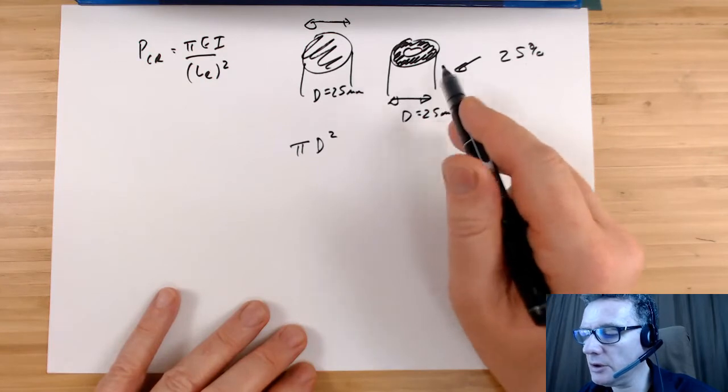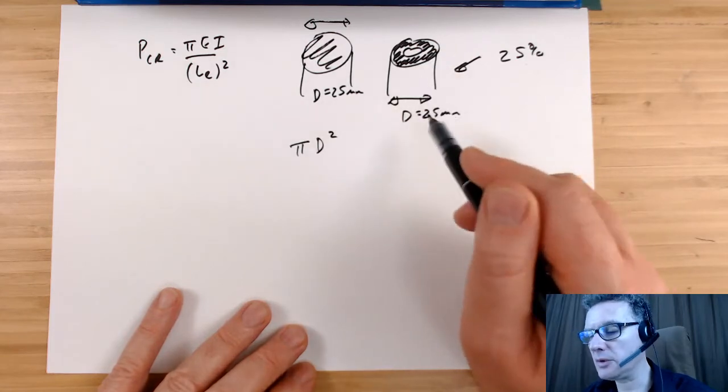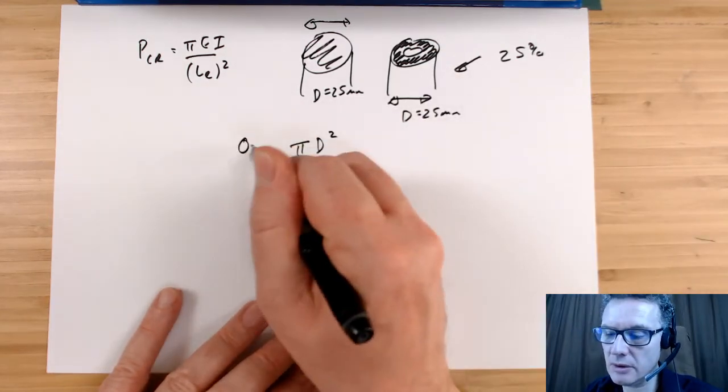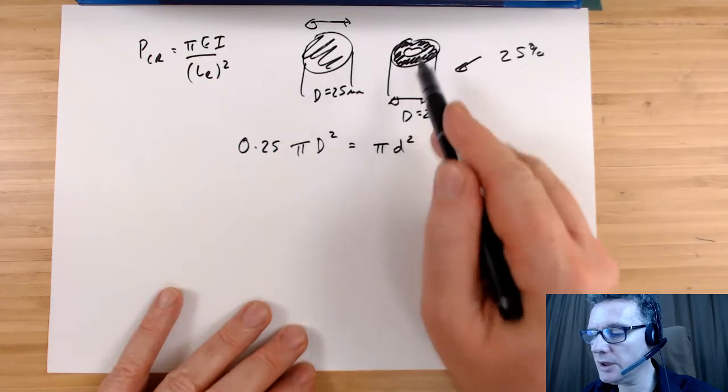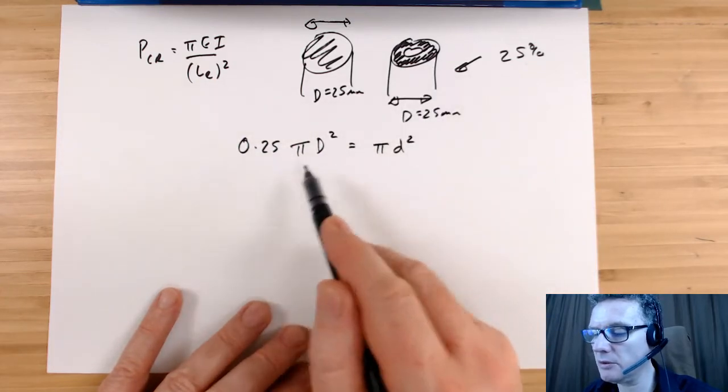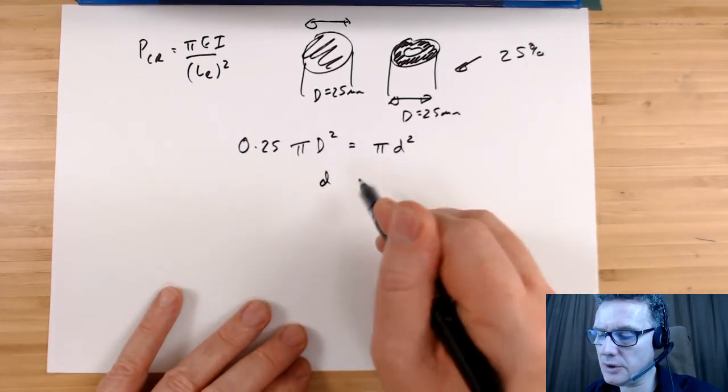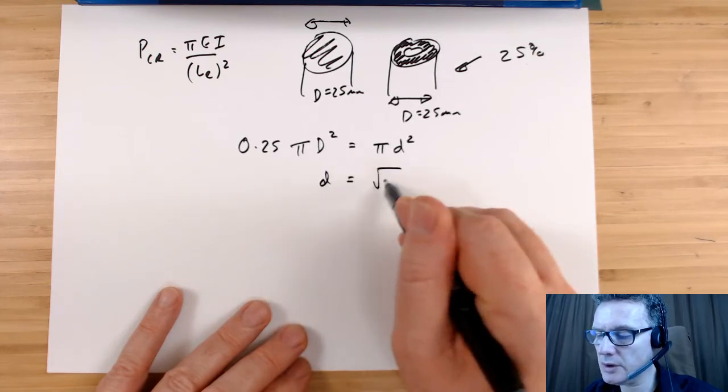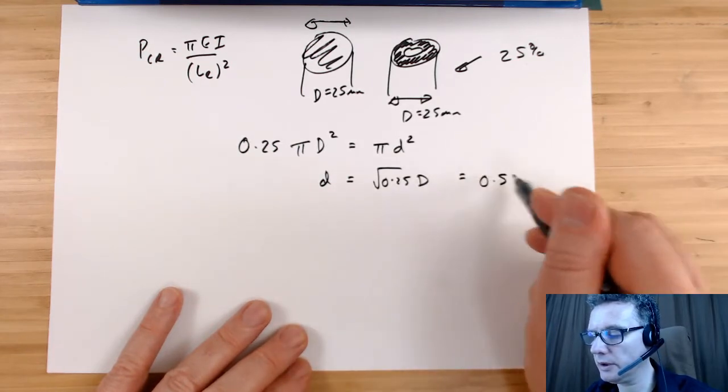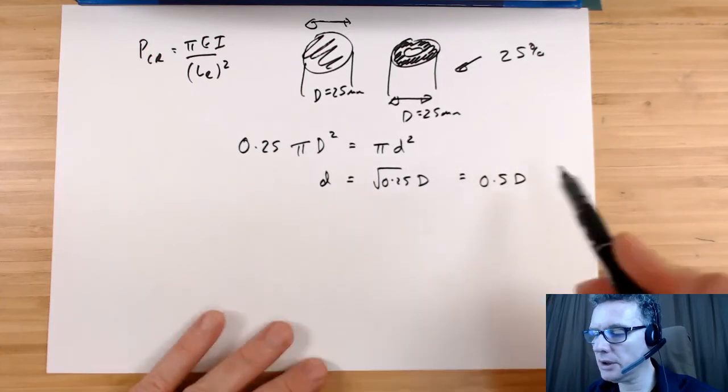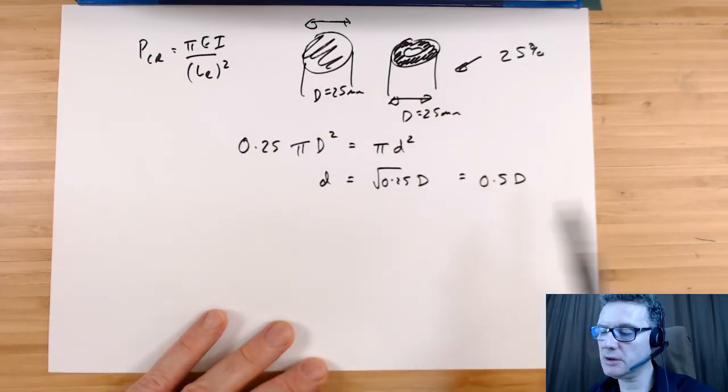I want the inner section that I'm going to cut out to be 25% of this. So π little d squared—my inner section will be 25% worth of this, which will reduce my overall weight by 25%. Therefore, I've got d equals square root of 0.25 big D. The square root of 0.25 is 0.5D, so my inner little d is 0.5 of big D.